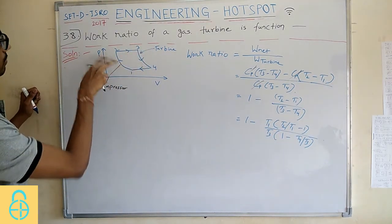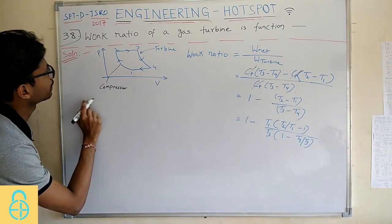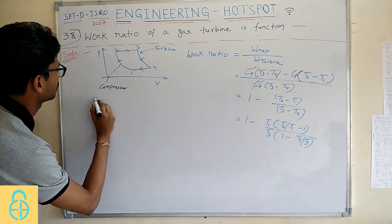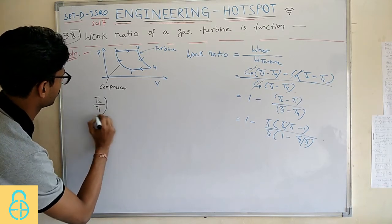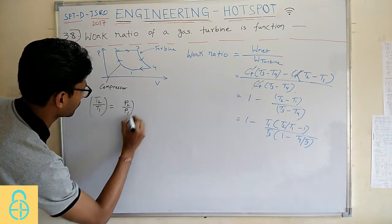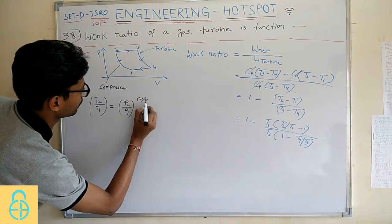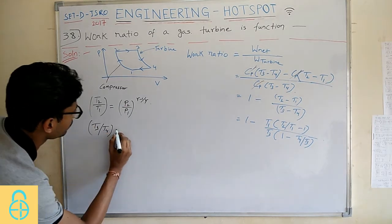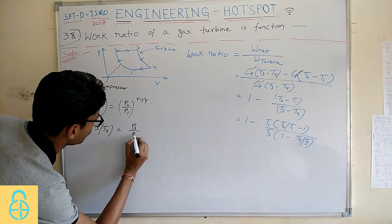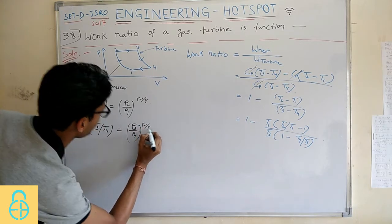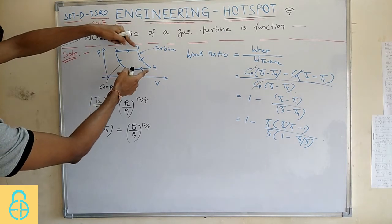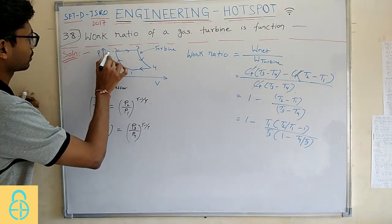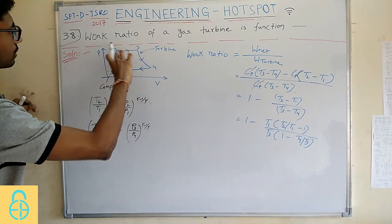If you look at this compression portion and if we treat it like an isentropic process, so it will be T2 by T1 equals P2 by P1 to the power gamma minus 1 by gamma. Now, if you see P2 by P1 will be P3 by P4 because the range of pressure is same for this process and this process.